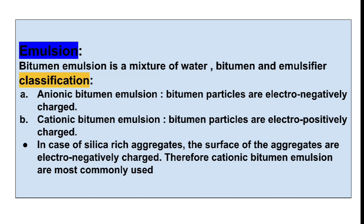Now let us come to emulsion. Bitumen emulsion is a mixture of water, bitumen, and emulsifier. Generally if we mix water and bitumen they won't mix together, so we use an emulsifier as a medium to mix water and bitumen.